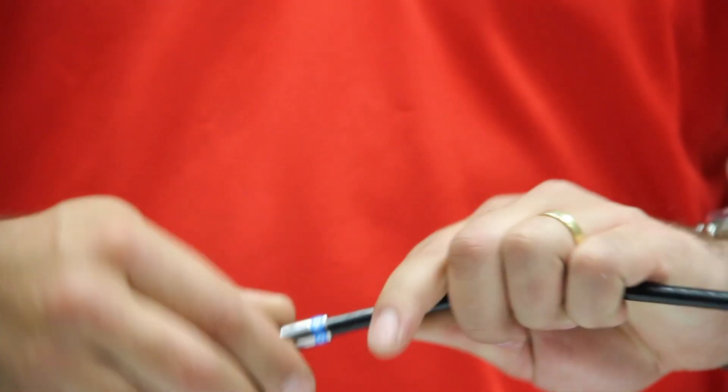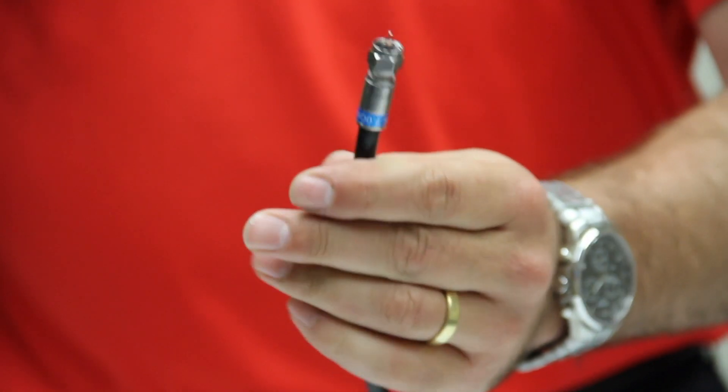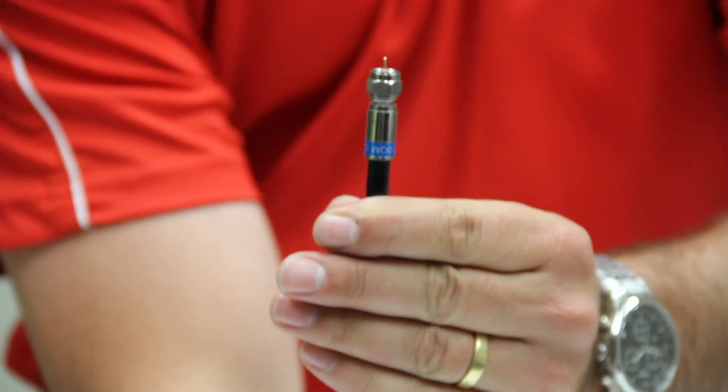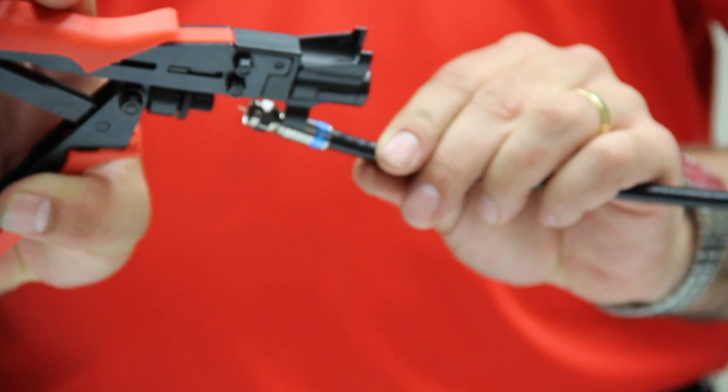Then push on the connector and simply compress. Take your compression tool, open handles, insert prepared connector, and compress by squeezing the handles together.